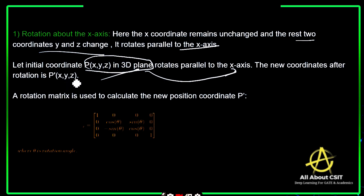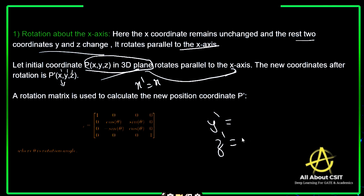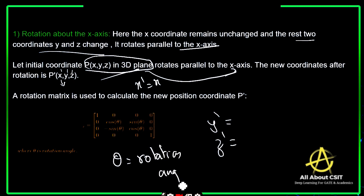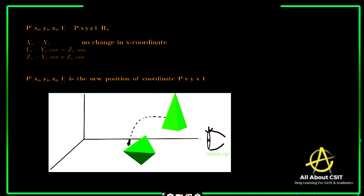After rotation about the X-axis, the new coordinates are P′(X′, Y′, Z′). Here X′ equals X — only Y′ and Z′are going to change. A rotation matrix is used to calculate the new position coordinates. The rotation matrix about the X-axis is: [1, 0, 0, 0 | 0, cosθ, sinθ, 0 | 0, −sinθ, cosθ, 0 | 0, 0, 0, 1], where theta is the rotation angle.